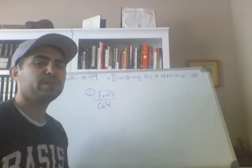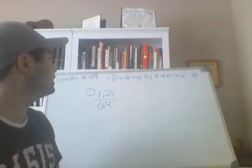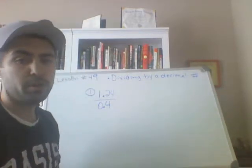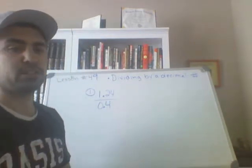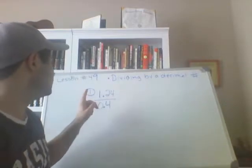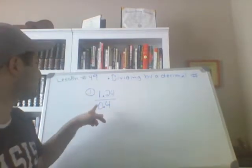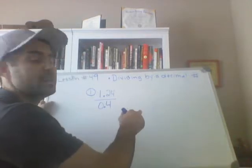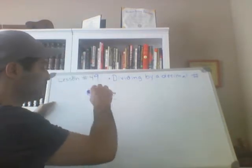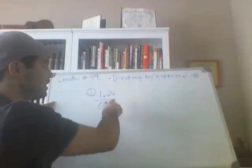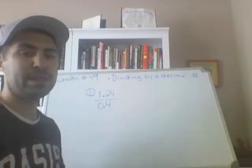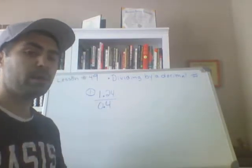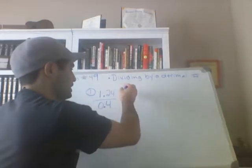All right, let's go ahead and do lesson 49: dividing by a decimal number. So we have a fraction right here, and we know that all fractions can be changed into division problems — top divided by bottom, numerator divided by denominator. So what I'm going to do right here, but before I change this into a division problem, I want to make this into an easier division problem by multiplying top and bottom by 10.